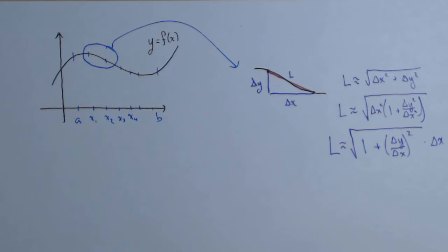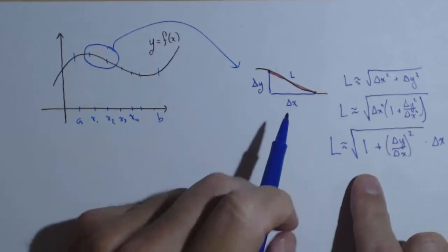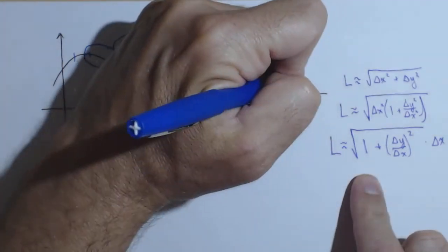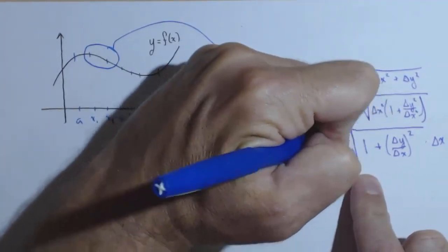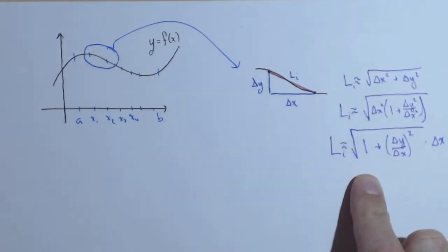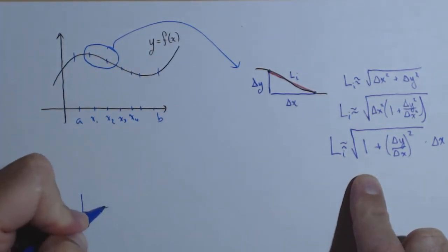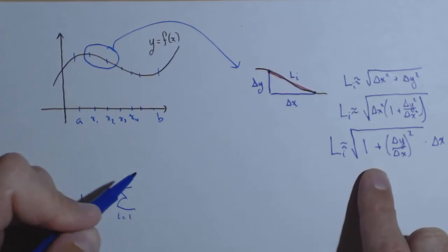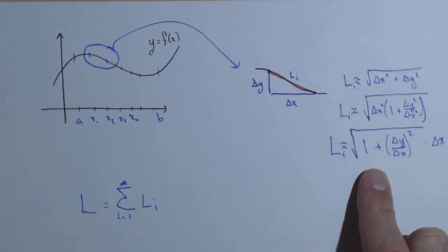Now, what we need to do is, this is the contribution of just this one piece, so maybe I should put this as L sub i, because that's that i-th slice. Then, the total length is going to be the sum of these, i equals 1 to n, of all these L sub i's.